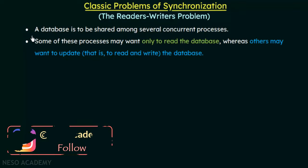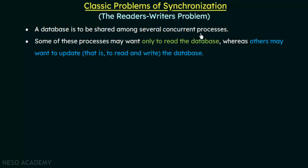In the readers-writers problem, we consider a database shared among several concurrent processes. Some of these processes may want only to read the data, whereas others may want to update — that is, read and write the database. So different processes concurrently may want to read the data or read and write to it.